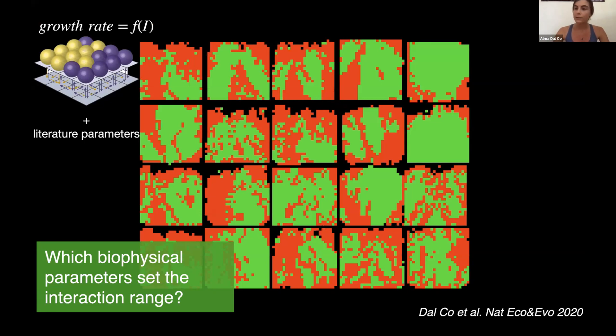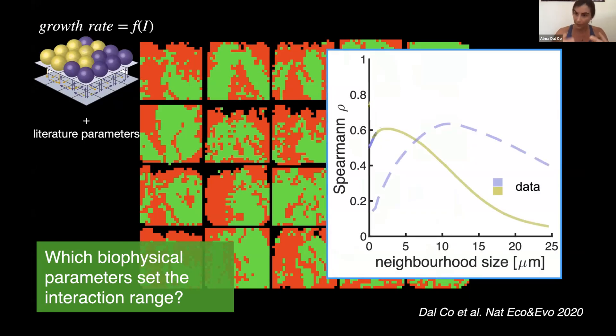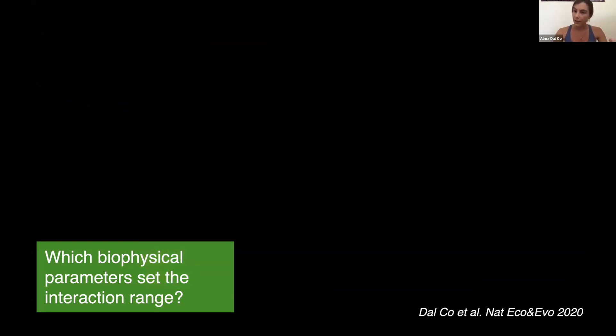Now we use these predicted growth rates to repeat the same analysis that we did on the actual measured growth rate. And what we find is that the model is able to recapitulate the interaction range that we measured, we find experimentally.